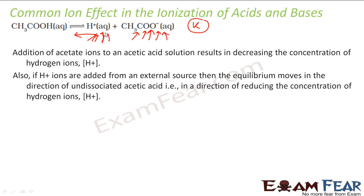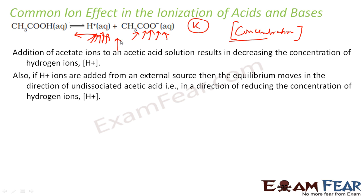Similarly, if you add H+ ions from an external source, the equilibrium will move in the left direction because the stress of adding H+ ions can be relieved only when the equilibrium shifts left. In that case, the acetate ion concentration decreases and acetic acid is formed in larger quantity. Adding H+ will obviously move the equilibrium to the left-hand side, and the concentration of acetate will decrease while acetic acid is formed in large quantity.